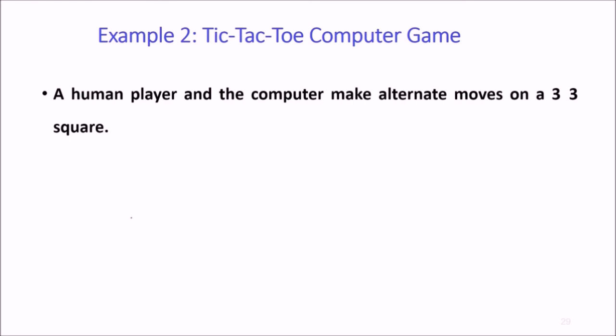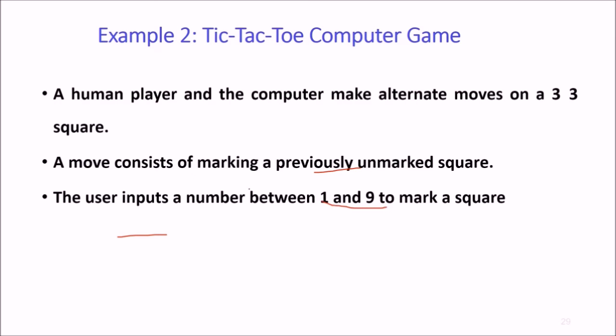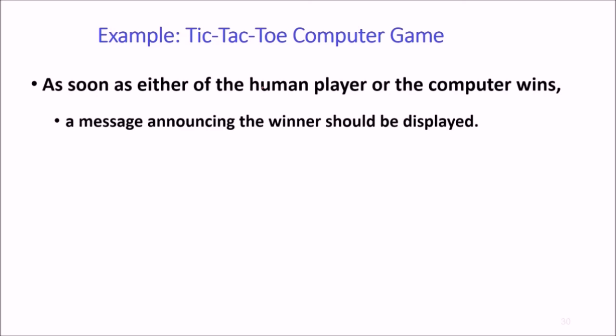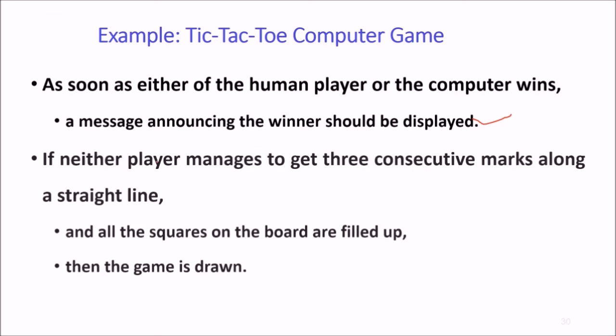For example, in tic-tac-toe computer game, the human player and computer make alternate moves on a 3x3 square. A move consists of marking a previously unmarked square and the user inputs a number from 1 to 9 to mark a square. Whoever is first to place three consecutive marks along a straight line, along a row, column or diagonal on the square, wins. As soon as either wins, a message announcing the winner should be displayed.